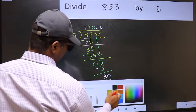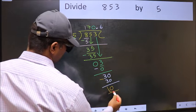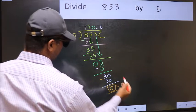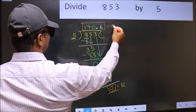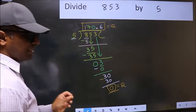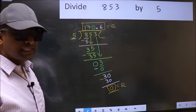Now you should subtract. 30 minus 30, 0. So this is our remainder. And this is our quotient. Did you understand where the mistake happens? You should not do that mistake.